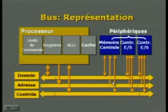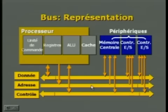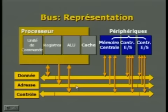To write in memory, the processor places the data on the data bus, places the address on the address bus, and sends the read or write signal via the control bus. For a read (lecture): the processor places the address on the bus adresse, places the read signal on the bus de contrôle, and the central memory places the data on the bus de données for the processor to recover. For a write (écriture): the processor places the data on the bus de données, places the address on the bus adresse, sends the write signal on the bus de contrôle, and the data is written into central memory.